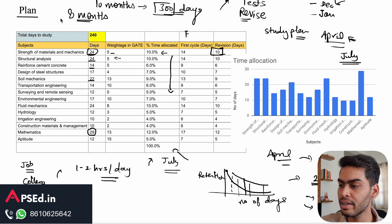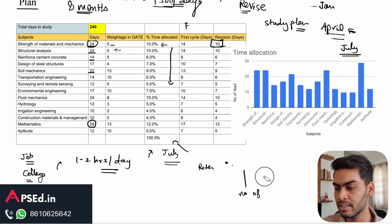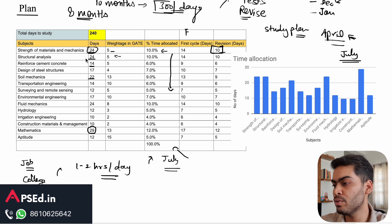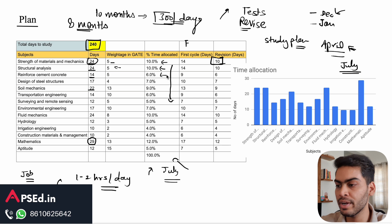Based on that, plan your revision also. Here on this plot you can see what are the total number of days available to you for each of the subject. I've written for 240 days and percentage time allocated based on my understanding, but personally it can be different for you.